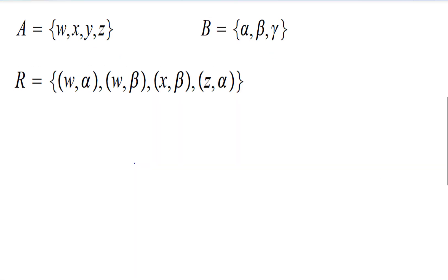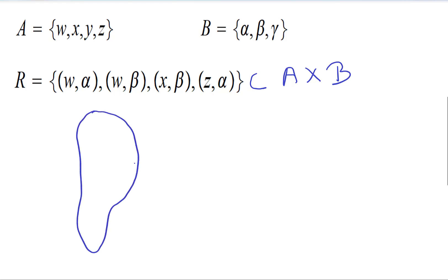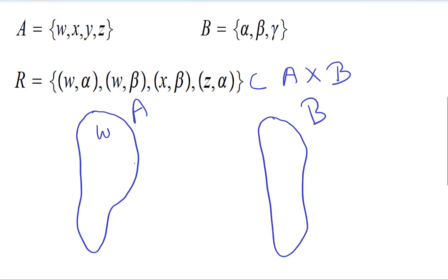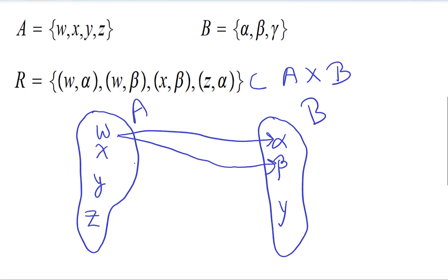This is a subset of A cross B. So if I did this — listing the set A and set B with elements W, X, Y, Z and alpha, beta, gamma — we have that W is related to alpha, W is related to beta as well, X is also related to beta, and Z is related to alpha. So this is a relation.